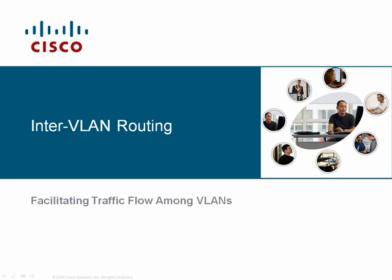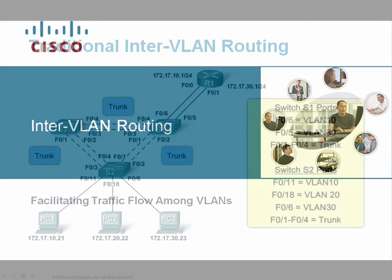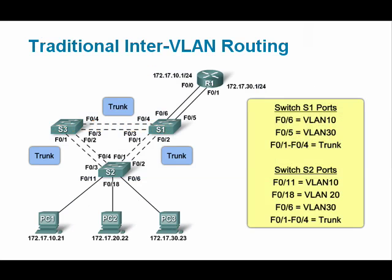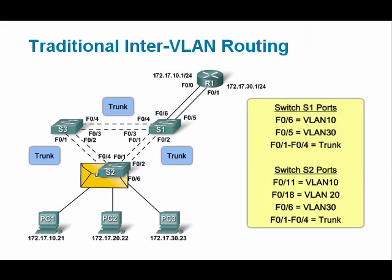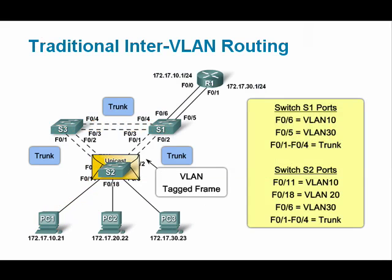This video will help you understand the different methods used to facilitate traffic flow from one VLAN to another in a network. InterVLAN routing is the process of forwarding traffic from one VLAN to another, and this process requires a router.